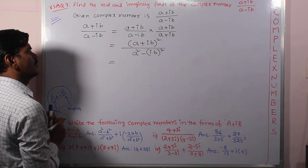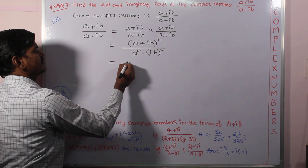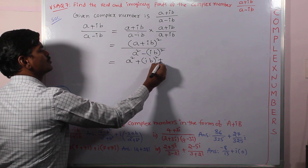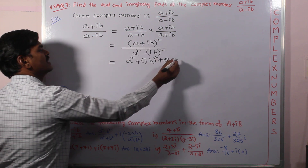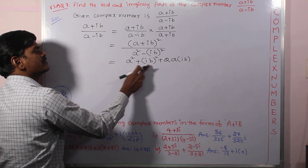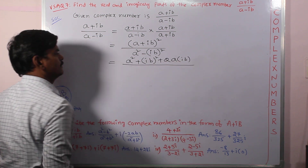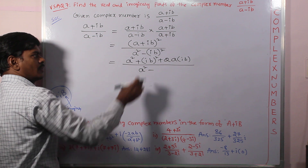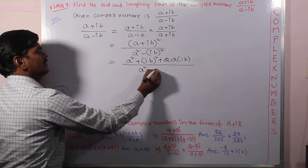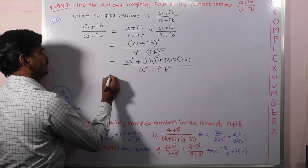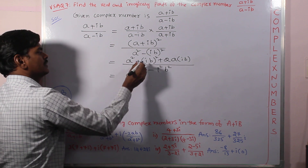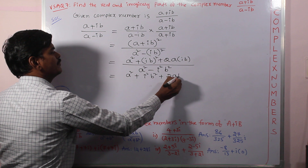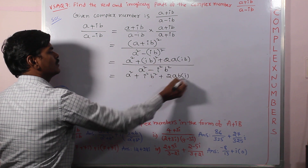For the numerator, (a + ib)² uses the formula (a + b)² = a² + 2ab + b². So we get a² + (ib)² + 2a(ib), which is a² + i²b² + 2abi. The denominator is a² minus (ib)², which can be written as a² - i²b².